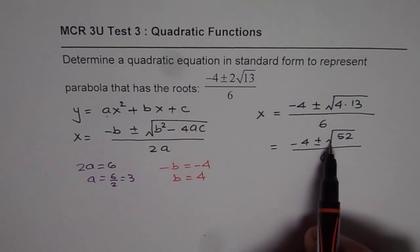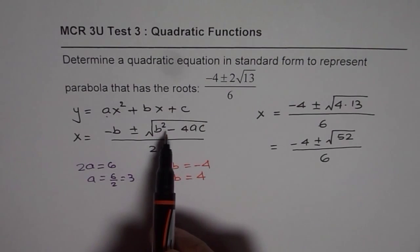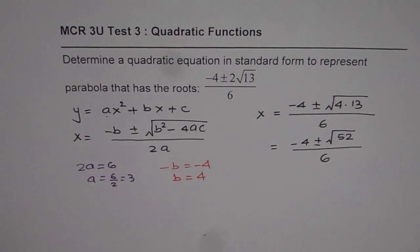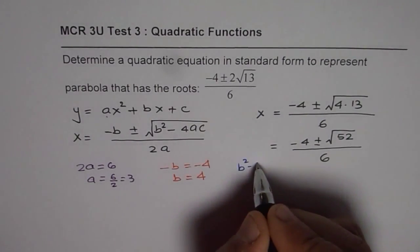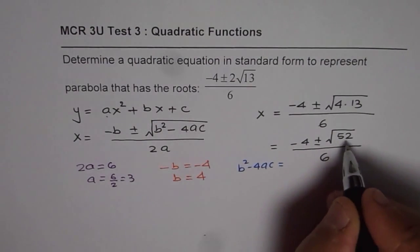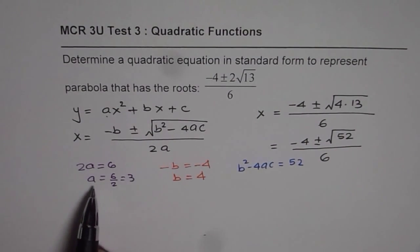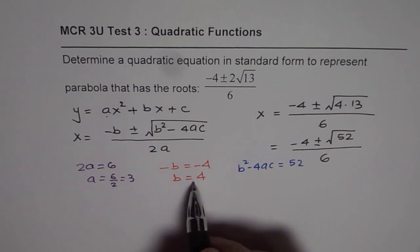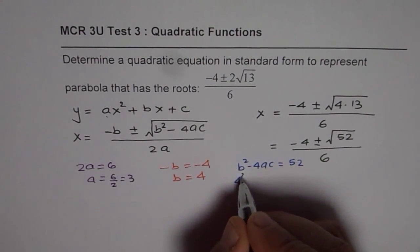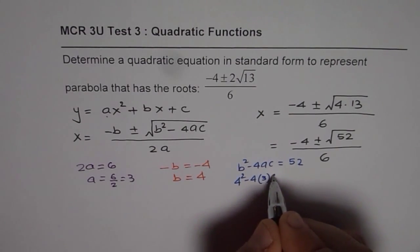The third part is within the square root sign we have 52 and that is equal to b square minus 4ac. So we have b square minus 4ac equals 52. Now we have already calculated a is 3 and b is 4. So let us substitute. B is 4, so we will have 4 square minus 4 times a is 3 times c is 52.